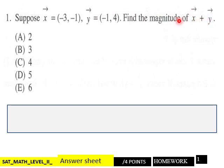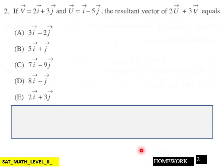Page two of our homework. If vector V equals 2i plus 3j and vector U equals i minus 5j, the resultant vector of 2U and 3V equals which one of these? Six points for that.